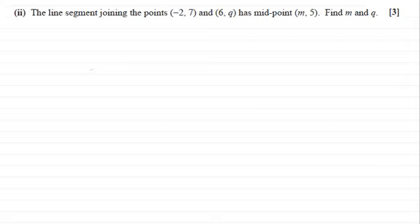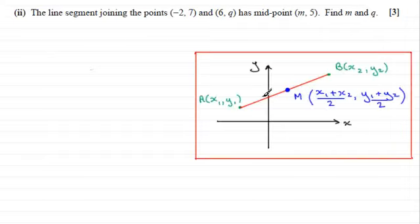If you didn't get those results then I'll show you how it's done. What you've got to remember is that the midpoint of two points, let's say a and b with coordinates (x₁, y₁) and (x₂, y₂) respectively, that midpoint is given as the mean of the x coordinates and the mean of the y coordinates.